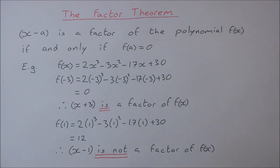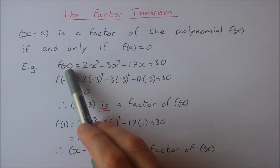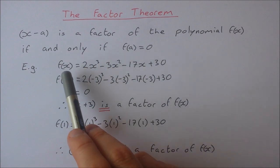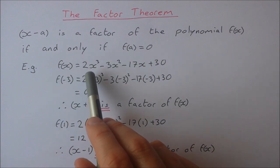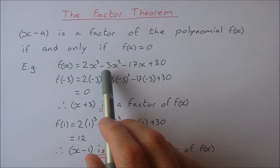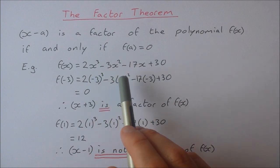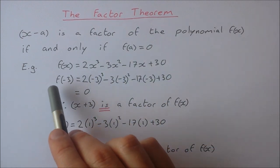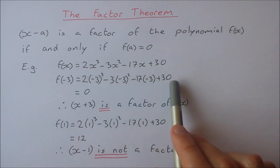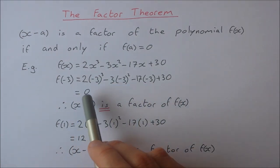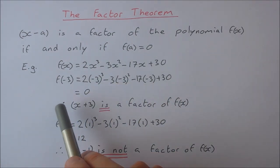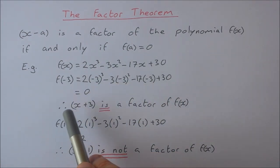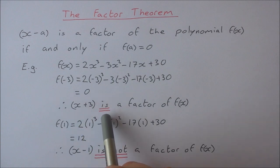In the first example I showed f of minus 3 in this polynomial f(x) = 2x cubed minus 3x squared minus 17x plus 30. Substituting in minus 3 you get 0, so therefore x plus 3 is a factor of f(x).